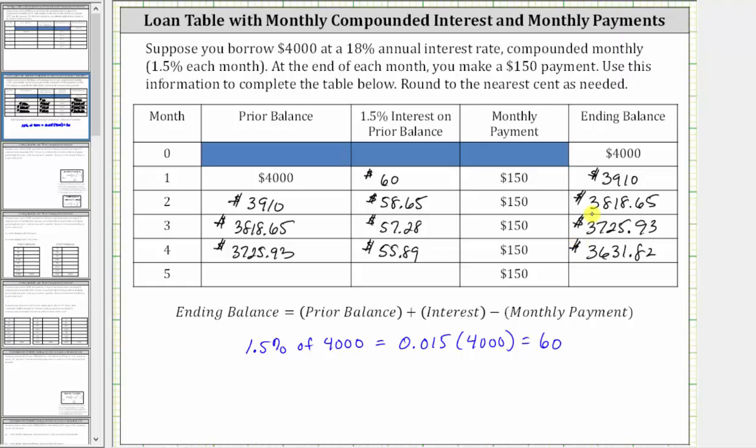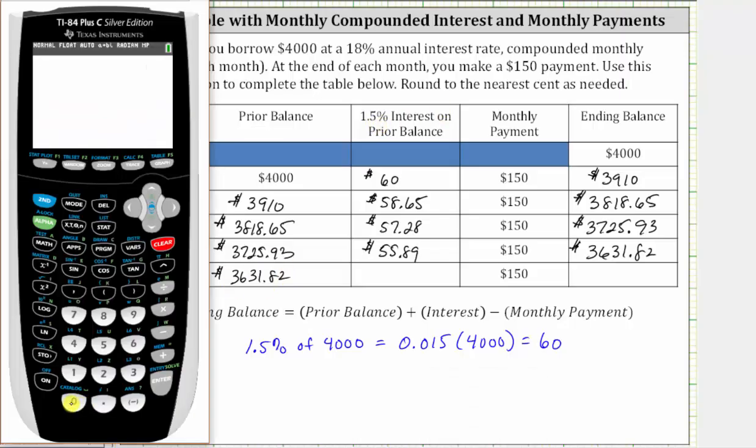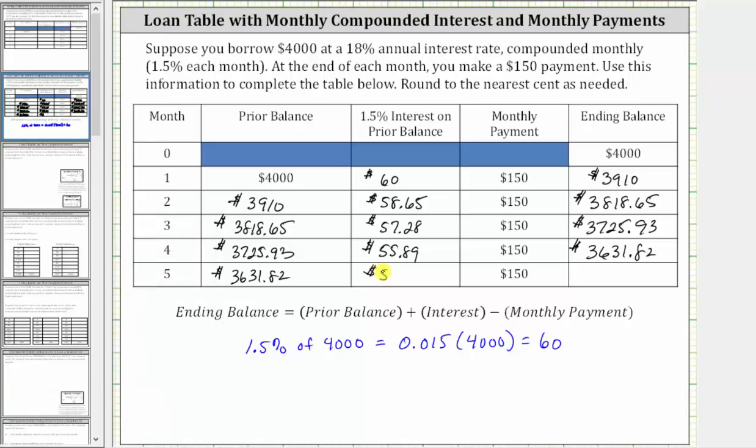This becomes the prior balance for month five. During the fifth month, you are charged 1.5% interest on this balance, which to the nearest cent is $54.48. The ending balance for month five is 3,631.82 plus 54.48 minus 150, which is equal to $3,536.30.